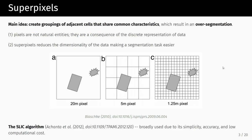The idea of superpixels is that when we think about raster data and we have pixels, they actually don't have a lot of meaning — they are just the result of the products we have. Our first goal is to merge them together, find similar pixels, reduce the dimensionality of our data, and make sense of our data.